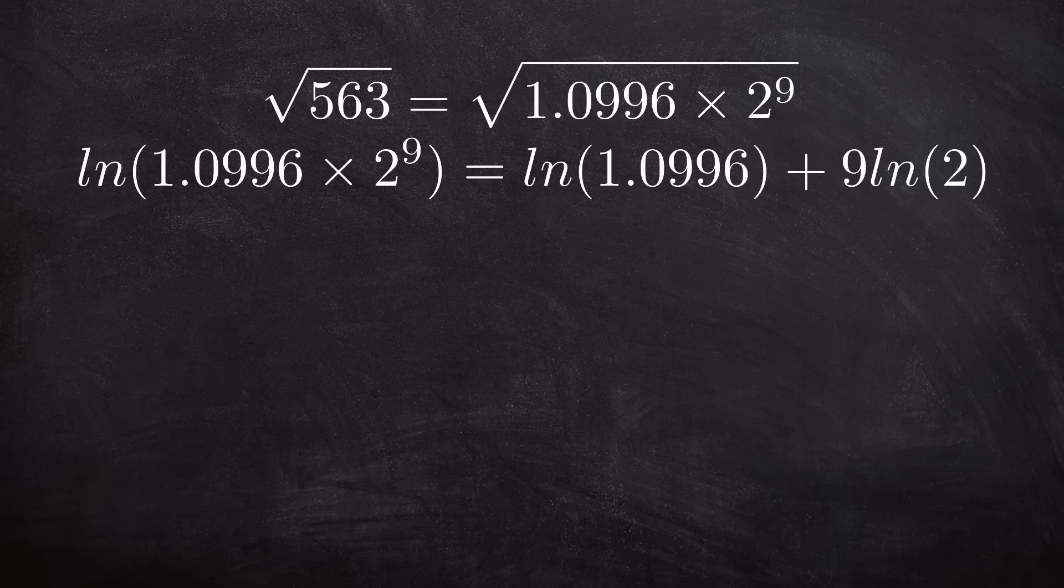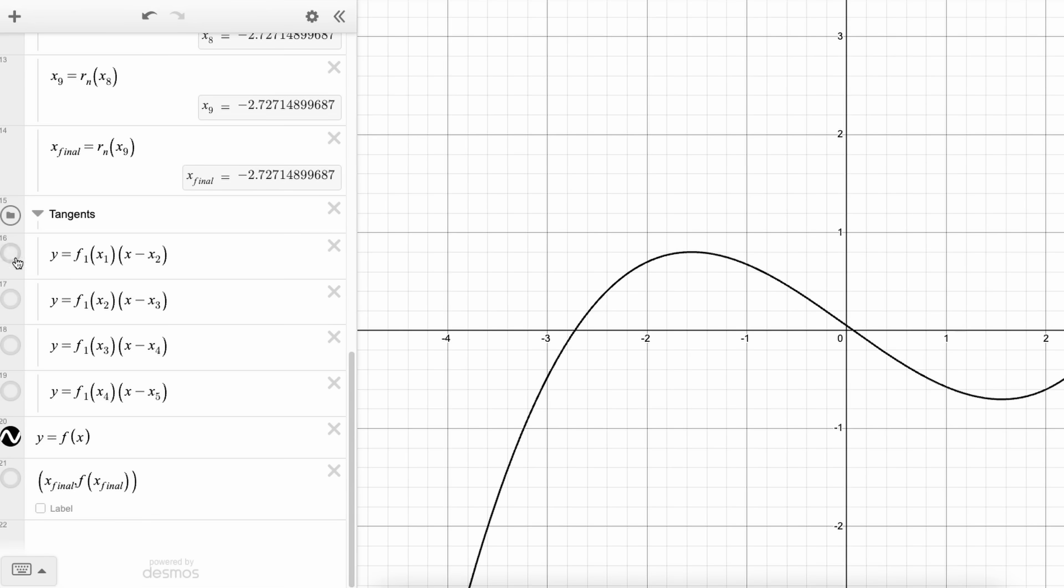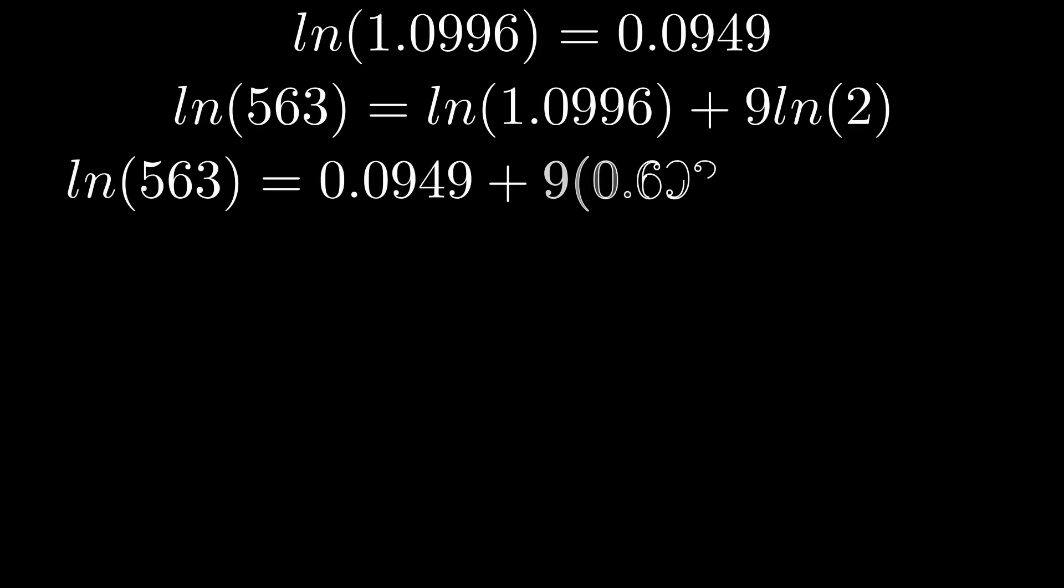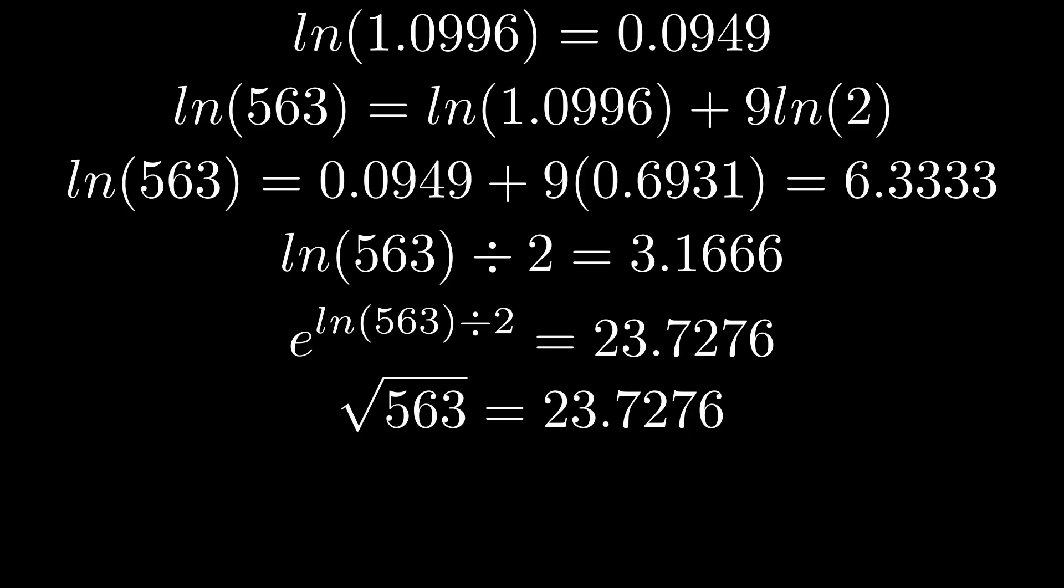At this point, it will refine it using the Newton-Raphson method but we're not going to get into that today. Step 3 is it will use the values obtained from the Chebyshev polynomials to find the natural log of 563. Once it's found this value, it will then half it to get 3.166 and then it will exponentiate it to end up with the value of 23.73 and this is the square root of 563. Now you know how a calculator finds square roots so you can f*** off.